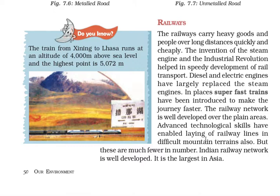The invention of the steam engine and the industrial revolution helped in the speedy development of rail transport. Diesel and electric engines have largely replaced the steam engines. In many places, super-fast trains have been introduced to make journeys faster. The railway network is well developed over plain areas, and advanced technology has enabled laying of railway lines in difficult mountain terrains as well.